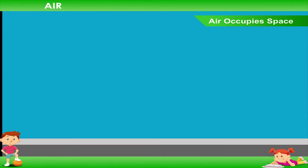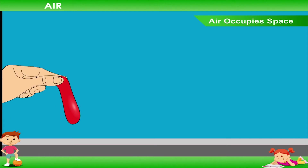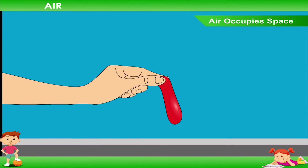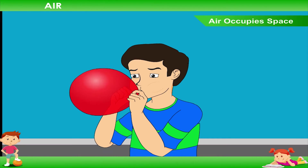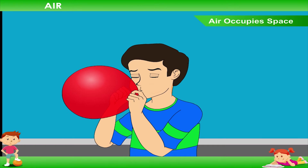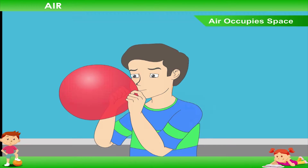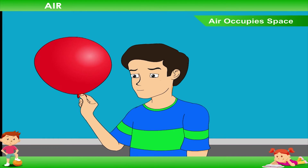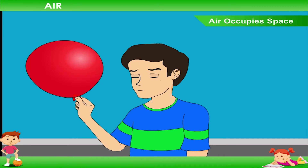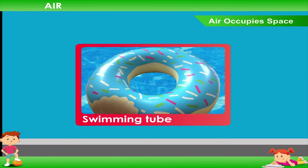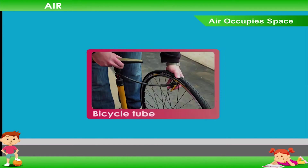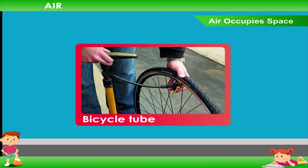Air occupies space. Take a balloon and blow air into it. The balloon becomes bigger and bigger when it is filled with air. This shows that air occupies space. We can fill air in a swimming tube, football, bicycle tube, etc.